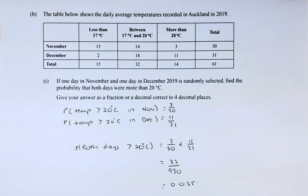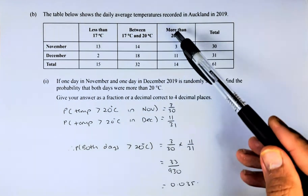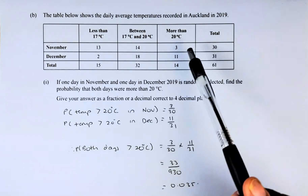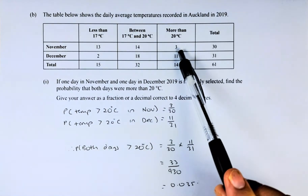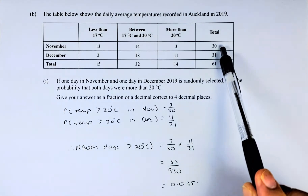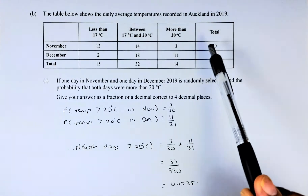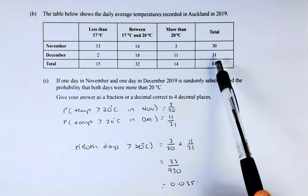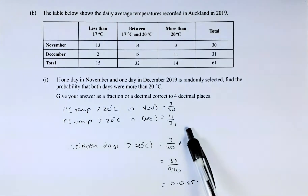Let's find the probability of a temperature that is more than 20 degrees. More than 20 in November is 3 out of 30. In December, it is going to be 11 out of 31.